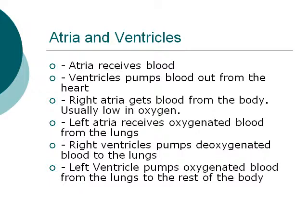Namely, the left and right atrium and the left and right ventricles. The right atrium gets blood from the body — usually it is deprived of oxygen. The left atrium receives oxygenated blood straight from the lungs. The right ventricle pumps oxygenated blood to the lungs, and the left ventricle pumps oxygenated blood from the lungs to the rest of the body.